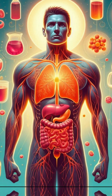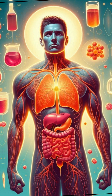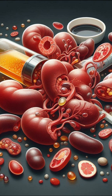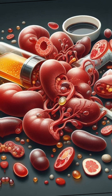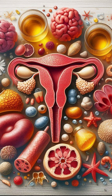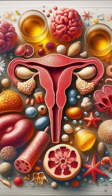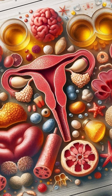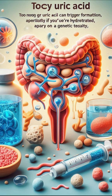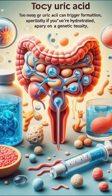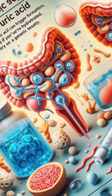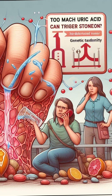Number two: uric acid stones. These stones often come from eating a lot of red meat, organ meats, or shellfish. These foods are high in purines — natural compounds that turn into uric acid in the body. Too much uric acid can lead to stone formation, especially in people who don't drink enough fluids or have a genetic tendency. These stones tend to run in families.